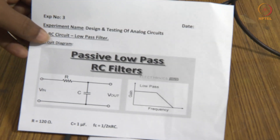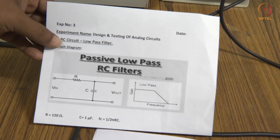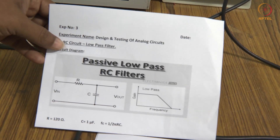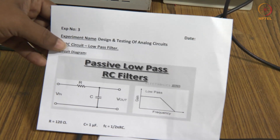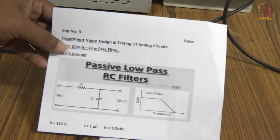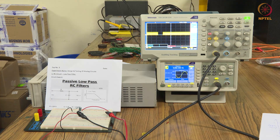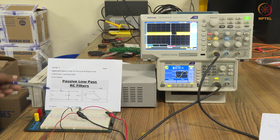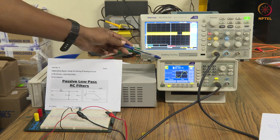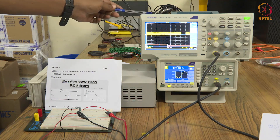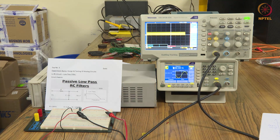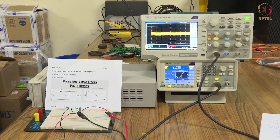Our RC low pass filter circuit has been designed and tested on a breadboard using RC components. The entire setup covers the design and testing of analog circuits using RC components — including the circuit, the design components, the input parameters, and the output. The entire setup demonstrates the design and testing of analog circuits for a low pass filter.